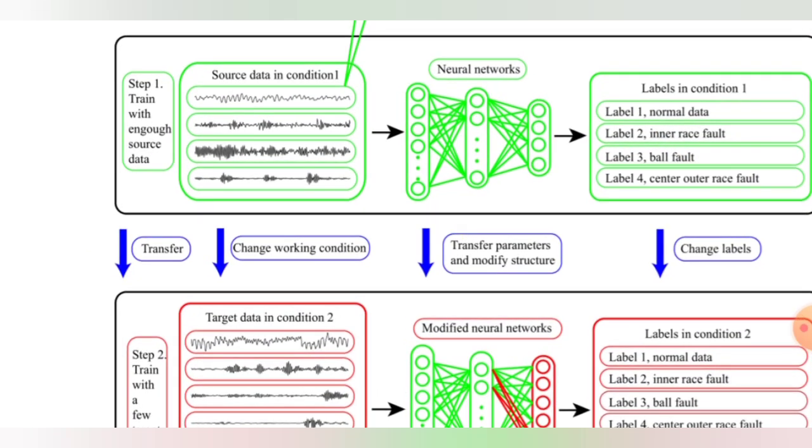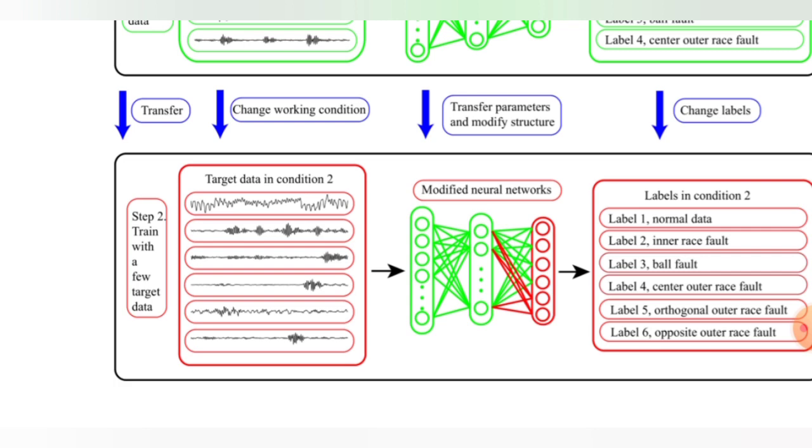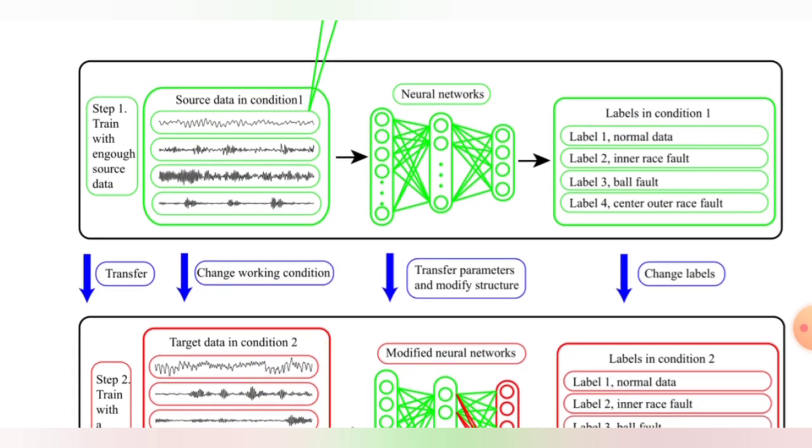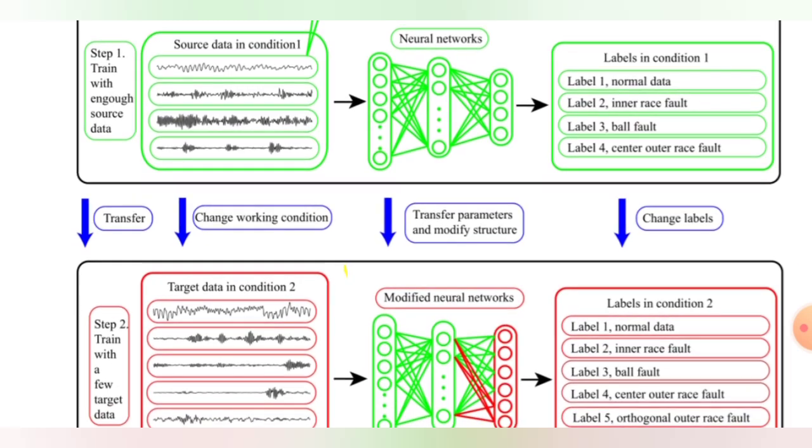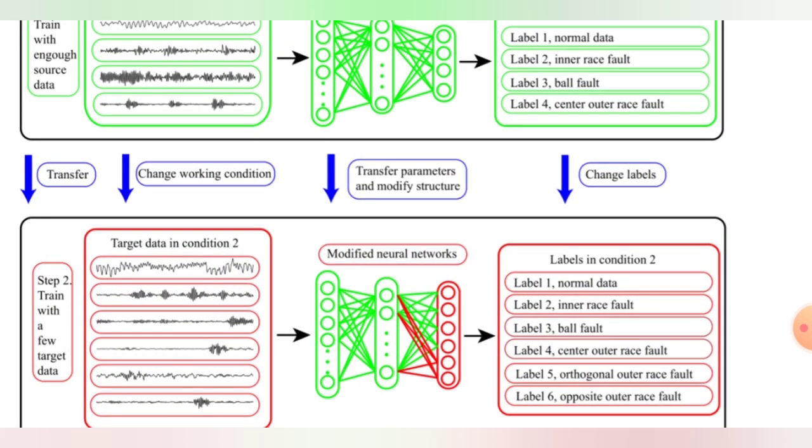As you can see from the transfer, the step one train with the inner source of data is transferred to step two. It is trained with a few target data, and here we can see all the force types of signals are converted into red signal, which means the failure has occurred in the bearing.